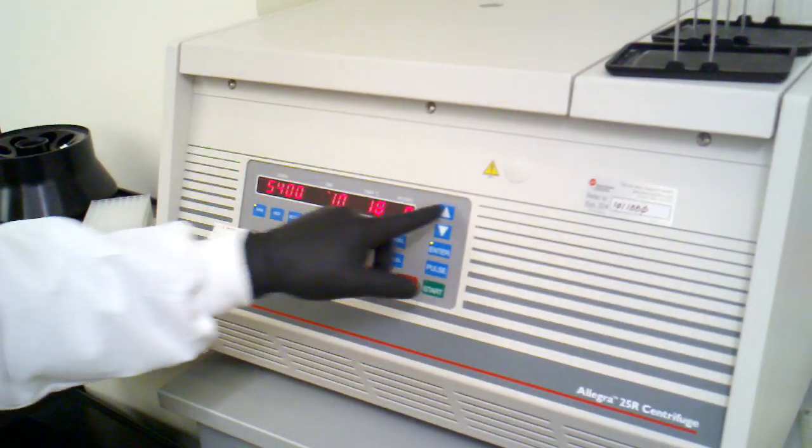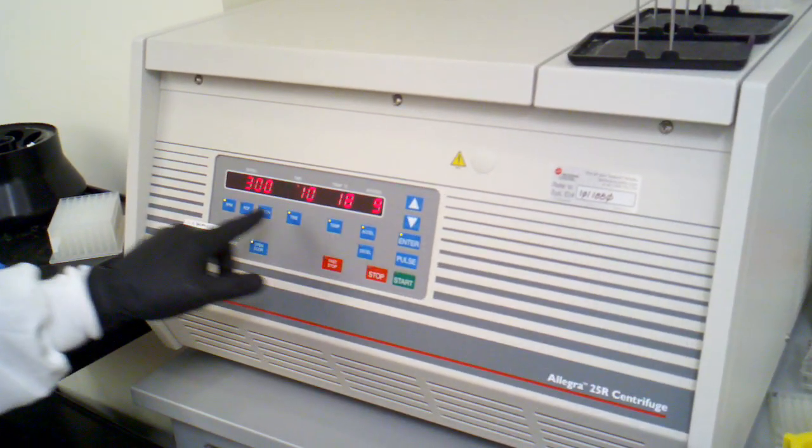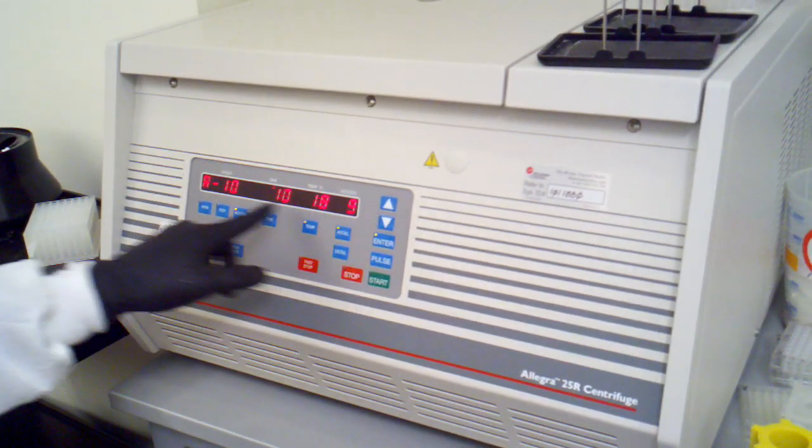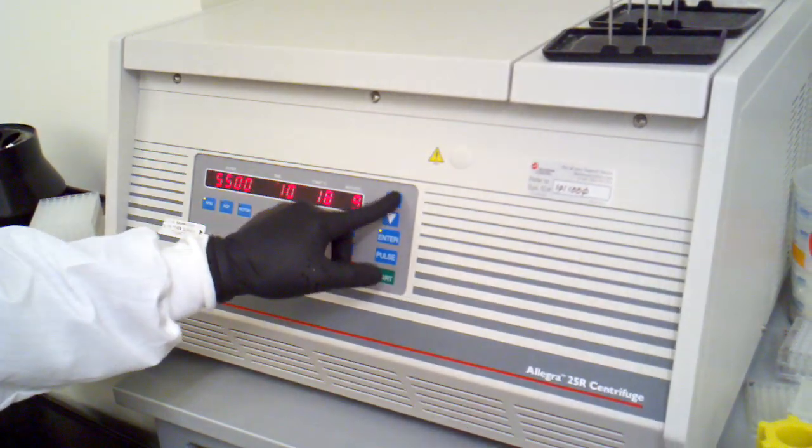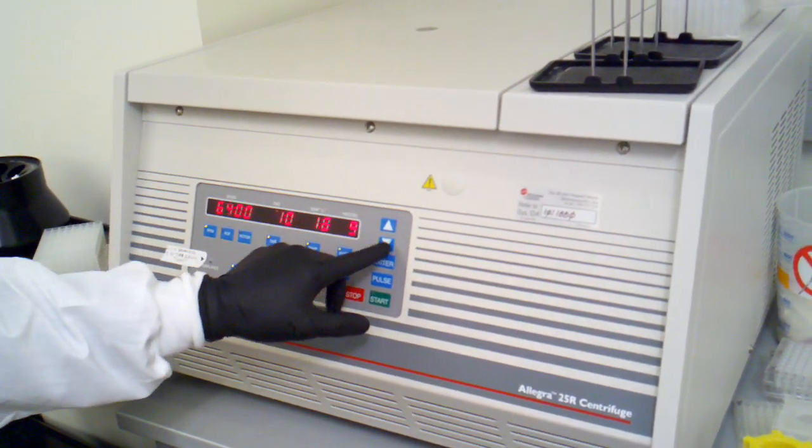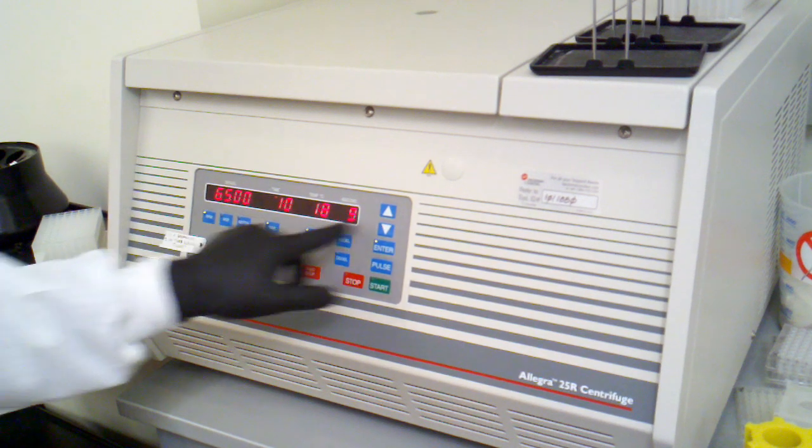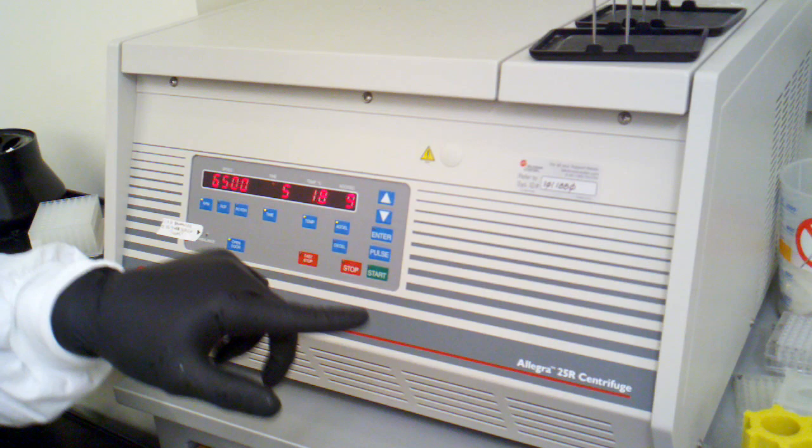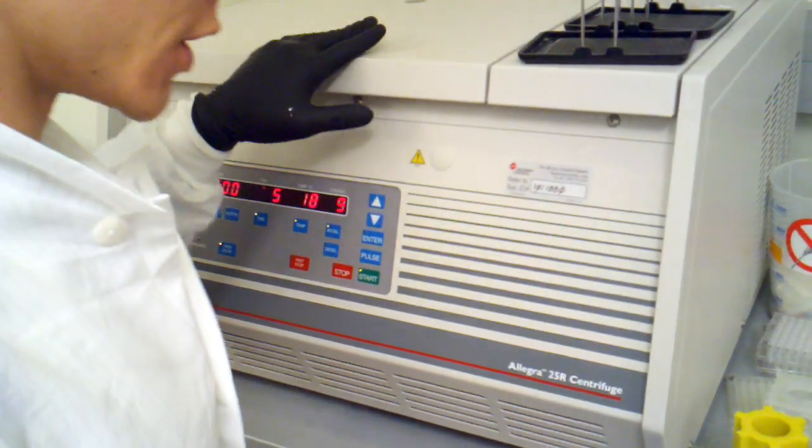RPM we're going to bump it up to 6500. That's because the rotor is wrong. We want TA10. RPM is going to be 6500. Time is going to be 5 minutes. And this should give us a nice little pellet.